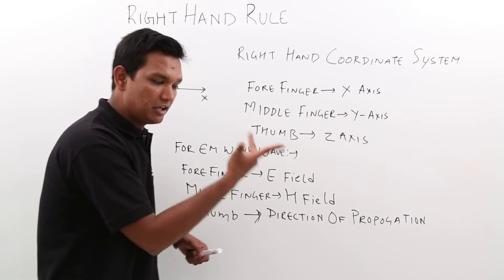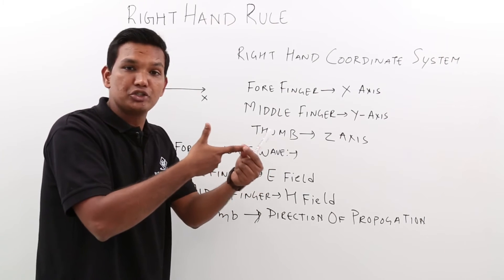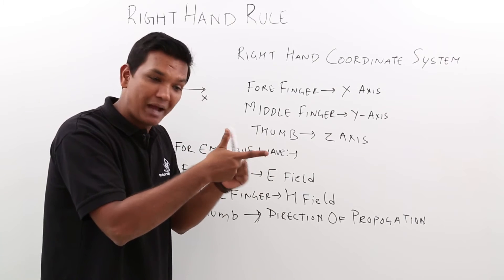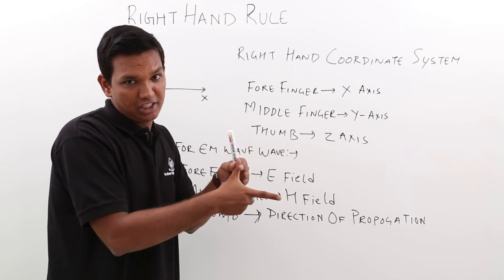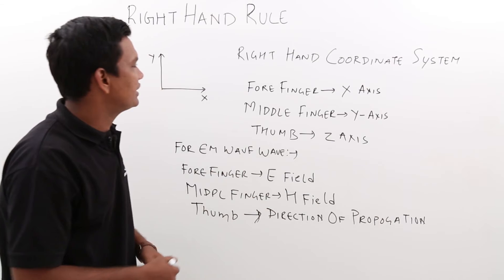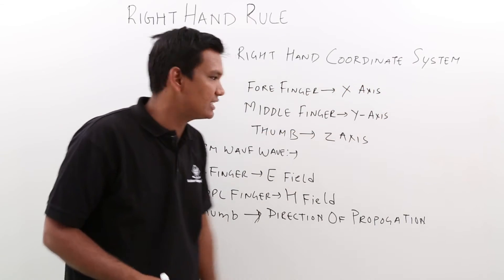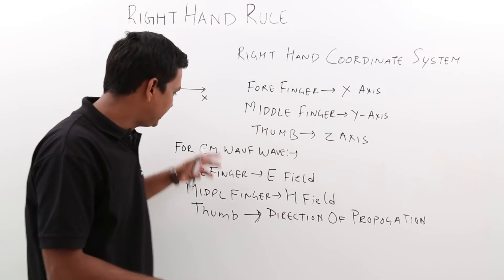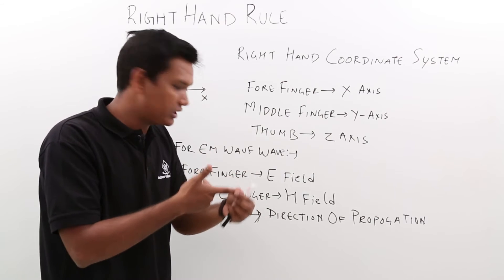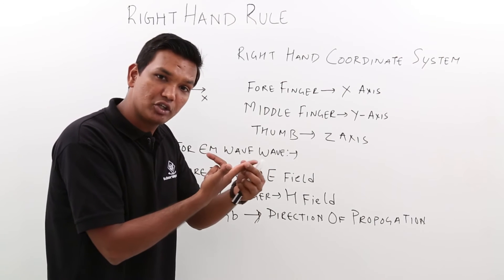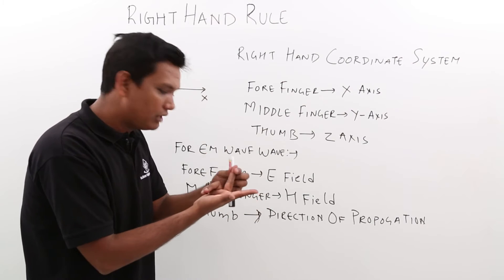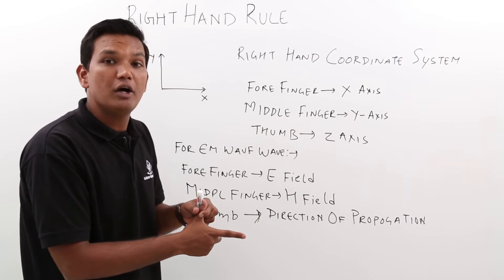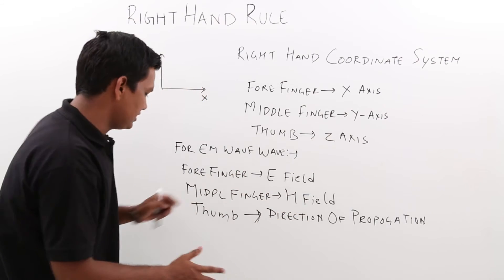So what it says is: if I take the right hand again, the forefinger should point in the direction of the electric field, the middle finger should point in the direction of the magnetic field, and the thumb should point in the direction of propagation. So we have understood the right hand coordinate system — x, y, z — and for an electromagnetic wave: forefinger along E field variation, middle finger along H field variation, and thumb along the direction of wave propagation. Let us understand this by a simple problem.